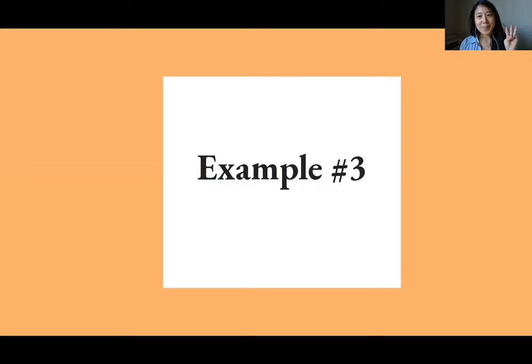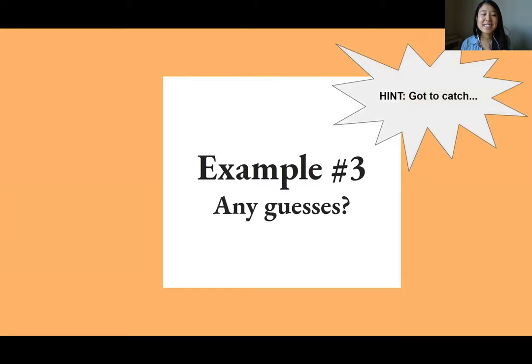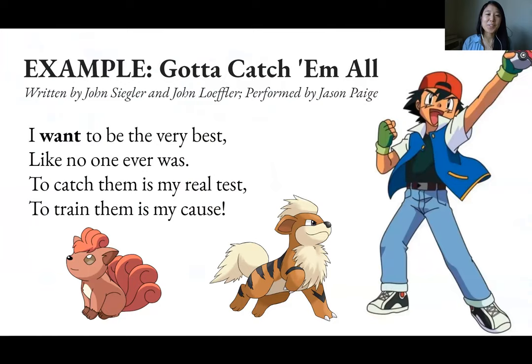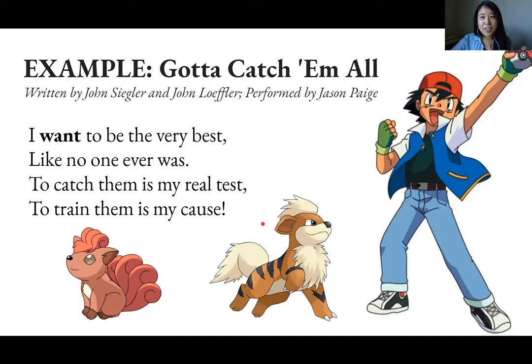Example number three is a bit of a flashback to childhood — the hint is 'you gotta catch.' If you guessed 'Gotta Catch 'Em All,' the theme song of Pokémon, you're right. In this example, Ash Ketchum declares he wants to be the very best. The song literally says, 'To catch them is my real test, to train them is my cause.' Every episode you're hit with this reminder of who he is and what he's going to do. That's where your character comes in — see if your character has their own theme song too.